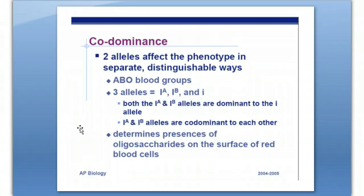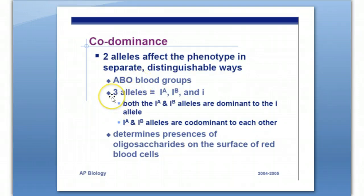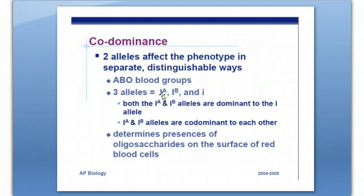Codominance is different from incomplete dominance. In incomplete dominance you have a blending of traits. However, in codominance, if you have two alleles, they're both shown separate and distinguishable from each other — not a blending. An example would be the ABO blood groups, which is also an example of multiple alleles. There are more than two alleles for blood types — here we have three alleles: the A allele, the B allele, and the I allele, which are basically glycoproteins or cell markers on the outside of red blood cells involved with immunity.